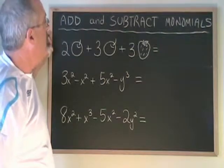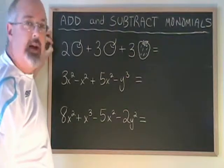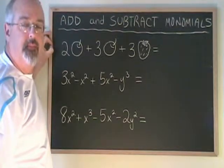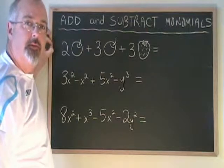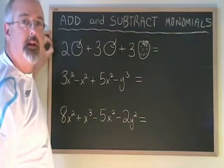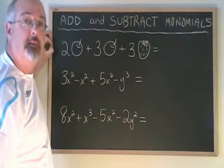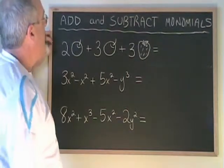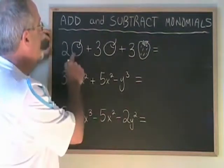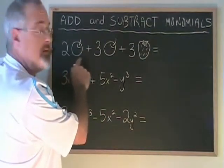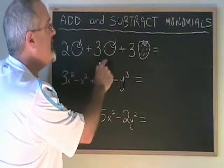In this video we are going to learn how to add and subtract monomials. The rule for adding and subtracting monomials is that you have to keep similar terms together. Here's an example: we have two apples plus three apples plus three strawberries.